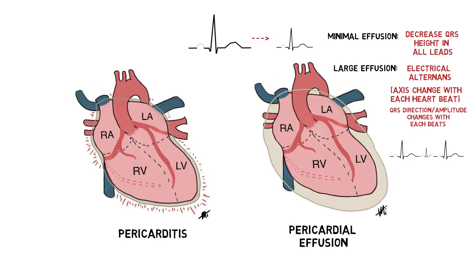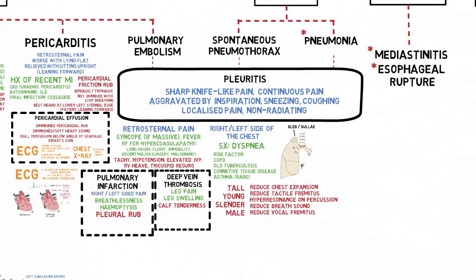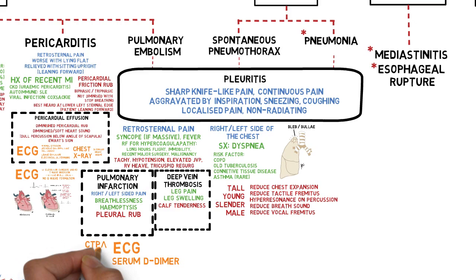In chest X-ray, pericardial effusion is seen as a globular heart shape. Next is pulmonary embolism. There are many investigations for this, each with different diagnostic value. ECG is still useful. We also have serum D-dimer, CT pulmonary angiogram, and VQ scan.